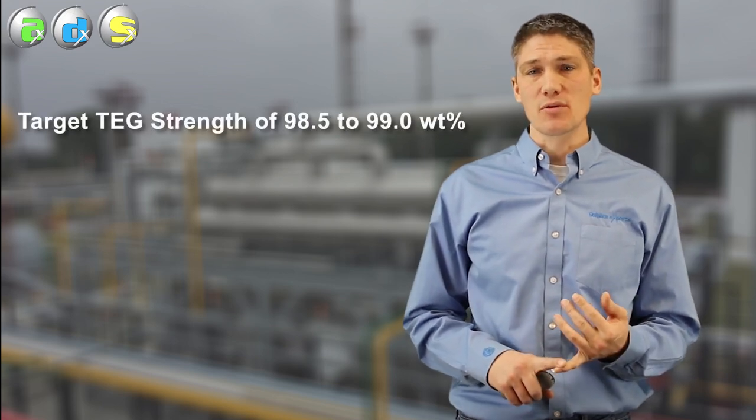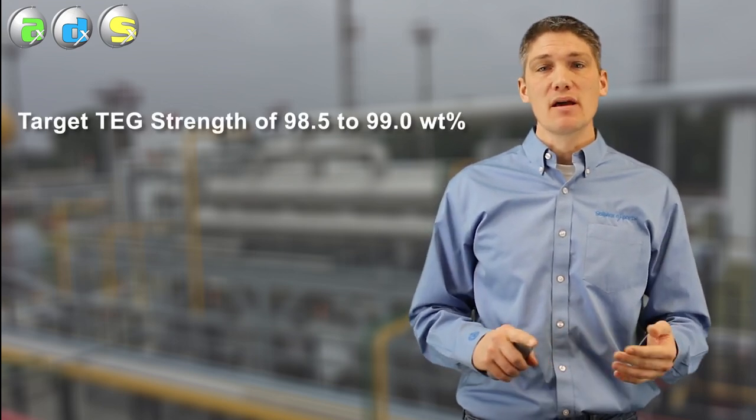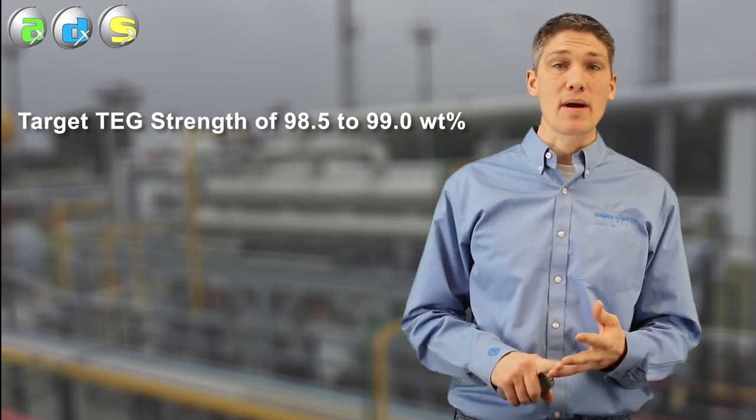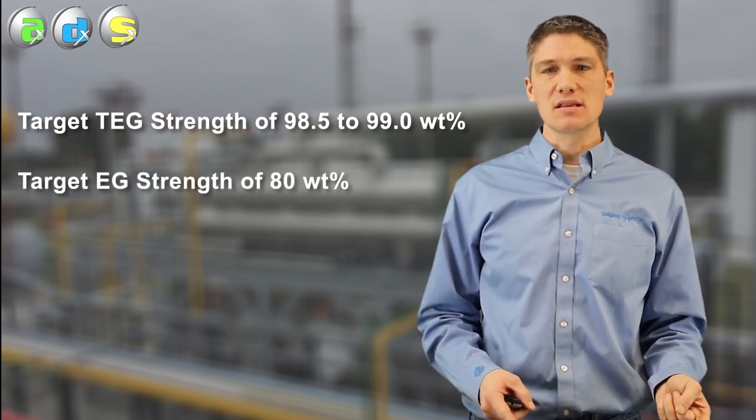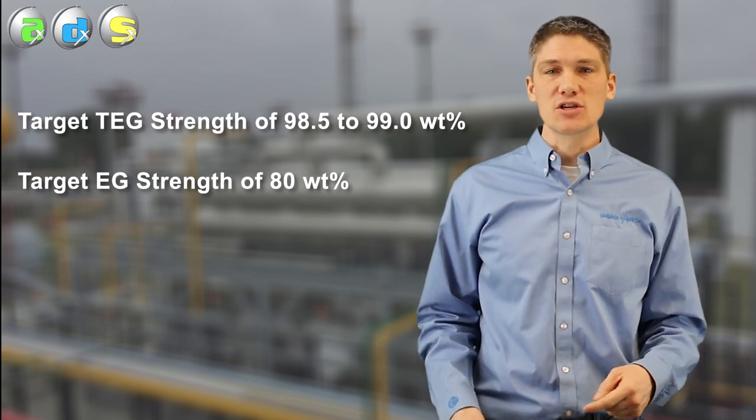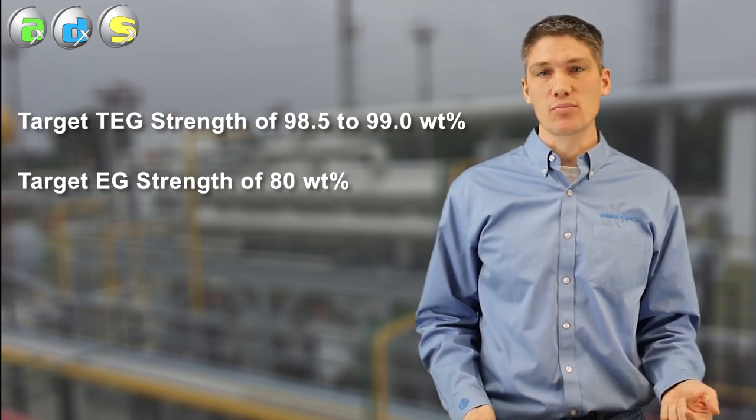So let's recap on the systems. Both the conventional TEG dehydrator and an EG refrigeration system can be used to meet water dew point. Each process uses specific glycol for a reason. TEG to absorb water vapor directly from the gas stream via contact either in a tray or packed tower. And EG forms an antifreeze blend by dissolving into the condensed water formed when chilling the feed gas in the refrigeration process.